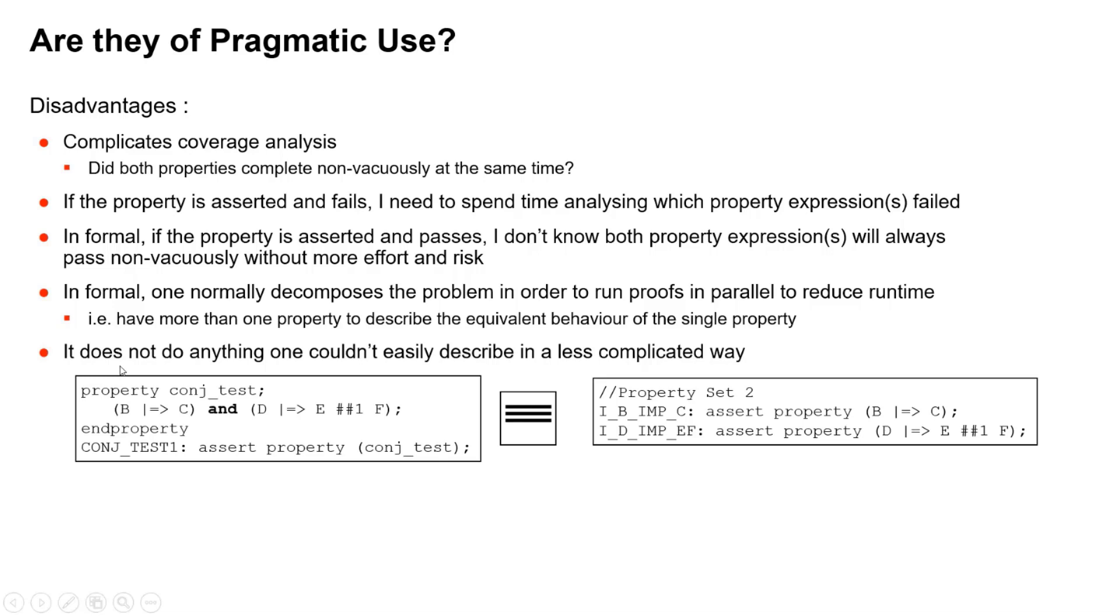Another disadvantage, and this is enough for me never to use it: it doesn't do anything you couldn't easily describe in a much less complicated way. So this expression here, the AND of these two properties, is the same as asserting each one separately. You've gained nothing and you've made it harder to understand.